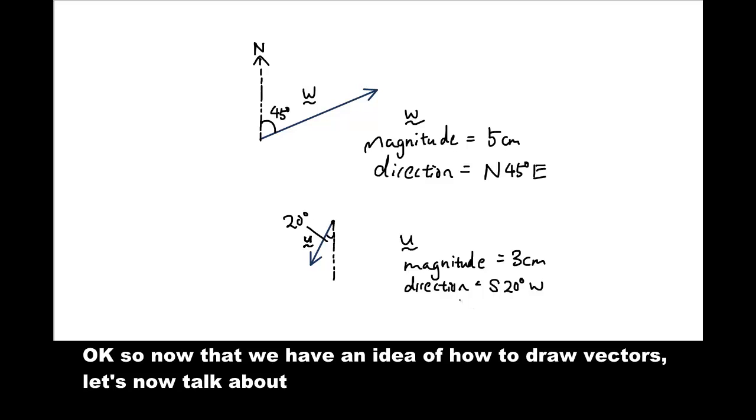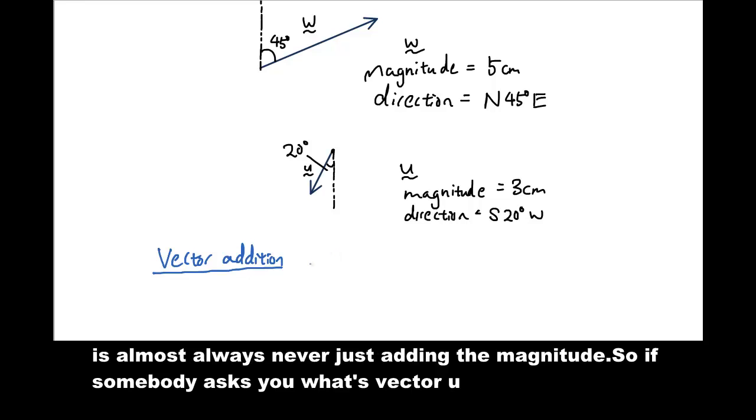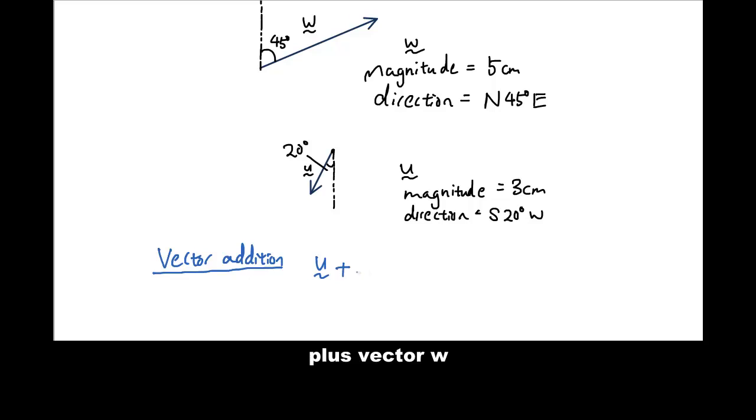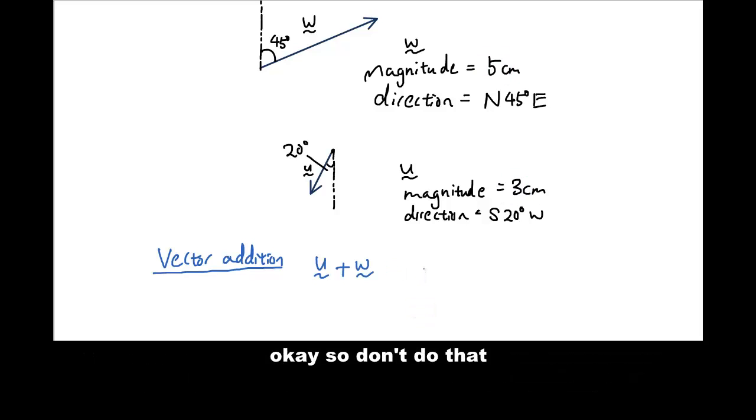So vector addition basically means adding two vectors together. Now it is almost always never just adding a magnitude. So if somebody asks you, what's vector u plus vector w, and you told them that the answer is just 3 plus 5, if you just said 3 plus 5, which is 8, your teacher is probably going to get really angry and say that you haven't learned anything. So don't do that.